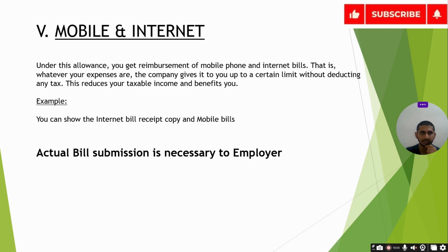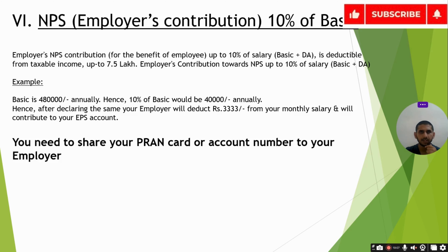For Mobile & Internet: whether you're working from home or hybrid, this component covers your mobile and internet expenses — minimum ₹12,000–₹14,000 per year. Keep those bills and declare within the March deadline to your employer that you want this to be non-taxable. Temporarily your monthly salary won't include this, but once you submit bills — either monthly or as a lump sum — you'll receive that money tax-free.